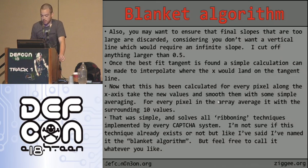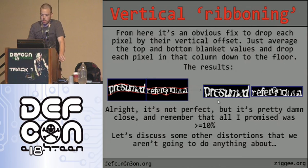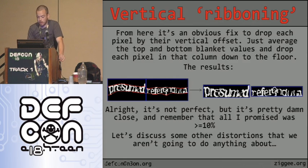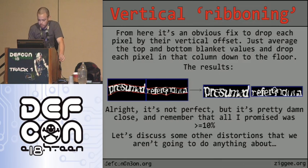That solves all the ribboning techniques implemented by every CAPTCHA system. I'm not sure if this algorithm already exists, but I've named it the blanket algorithm. To remove the ribboning, you simply drop each pixel by the vertical offset — average the top and bottom blanket values and drop each pixel in that column down. You can see how 'referendum' no longer has an inverted blob and the ribboning has been corrected. It's not perfect but it's pretty close, and all I promised was 10 percent.